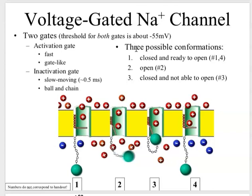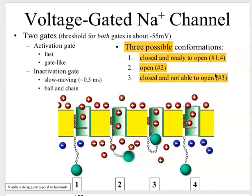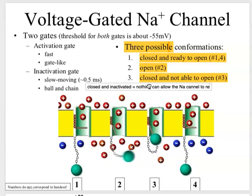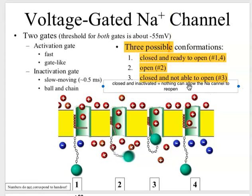Sodium channels are slightly different — they have three possible states. They can be closed and ready to open, as shown in states one and four. They can be open, and they are specific for sodium. Or they can be in a state called closed and not able to open, where a little inactivation ball blocks the channel. In this closed and inactivated state, nothing can cause the sodium channel to open — it needs some time to reset.